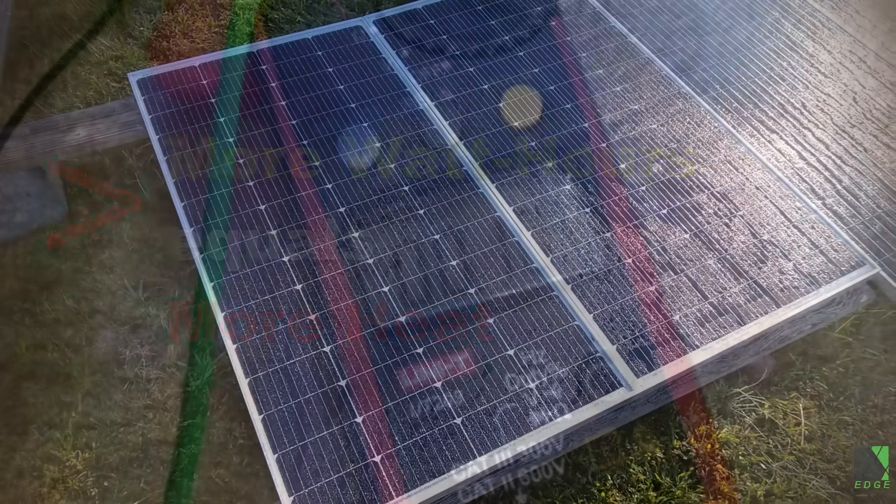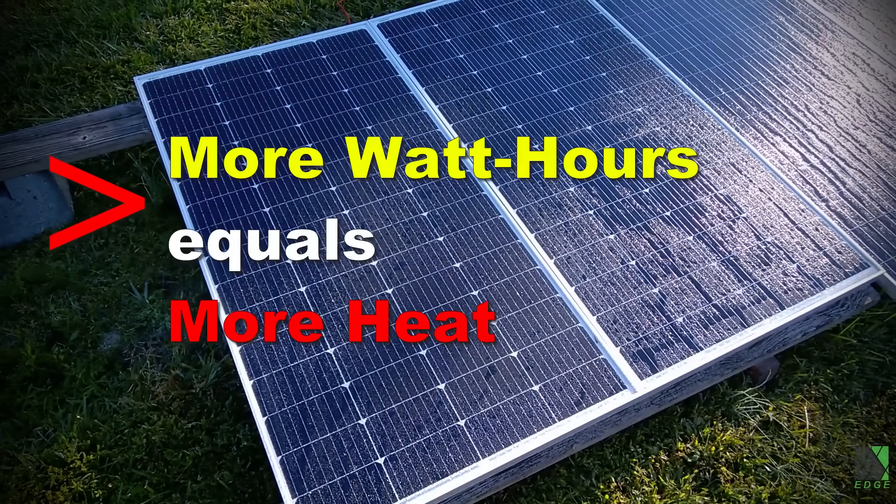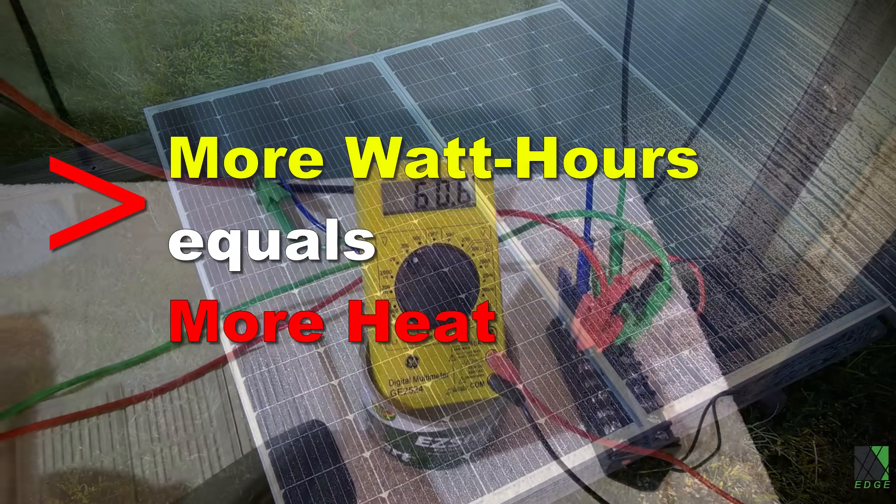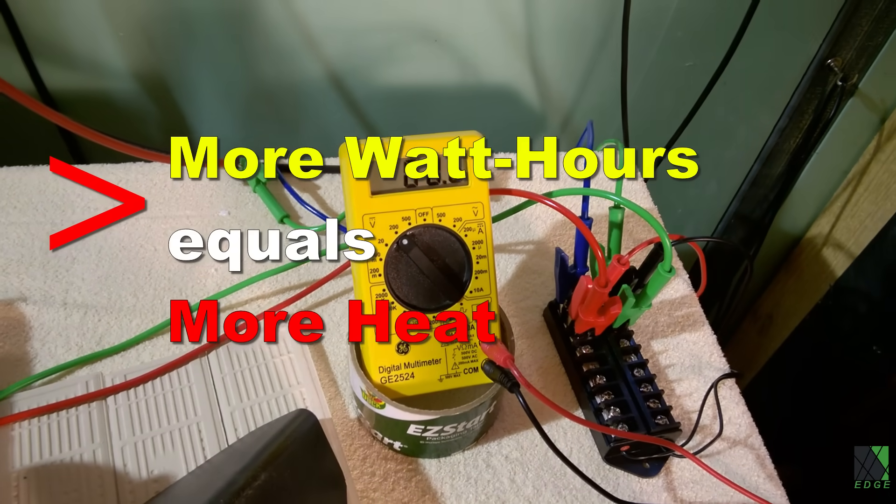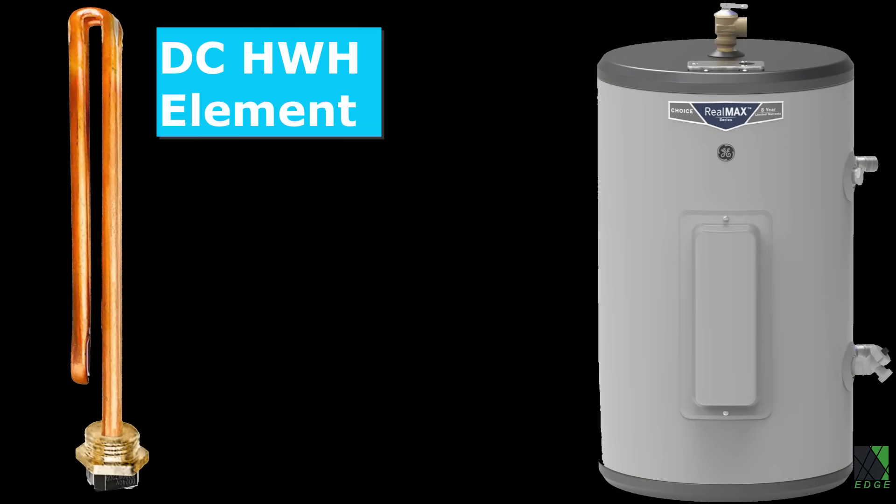Meanwhile, it extracts almost all the watt hours from a given solar panel throughout the day, which of course manifests as heat. And it does this for cheap. It's so simple to operate. A resistance-based heating element, such as the kind commonly found in hot water heater tanks, can do no such thing. This means the VMP or max power voltage cannot be targeted and cannot be tracked, so basically it means less watt hours and that means less heat.